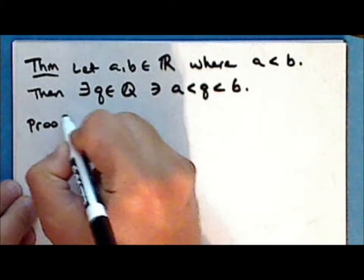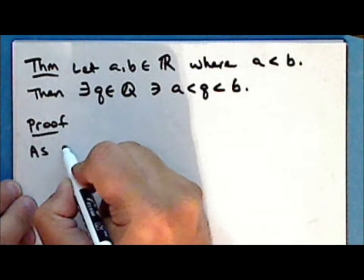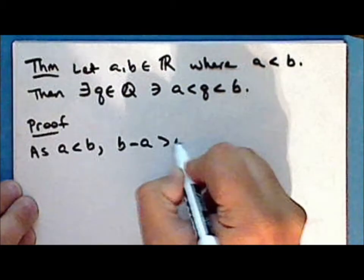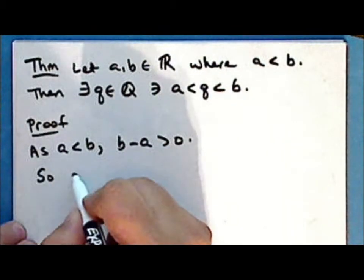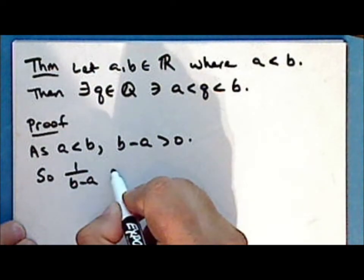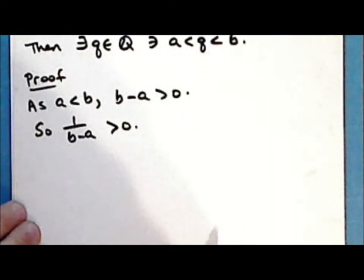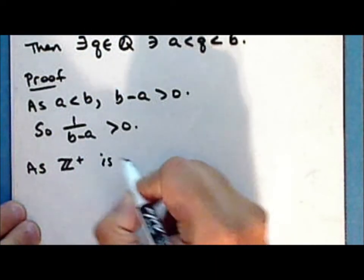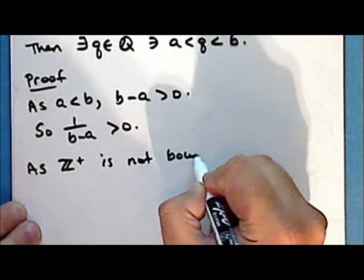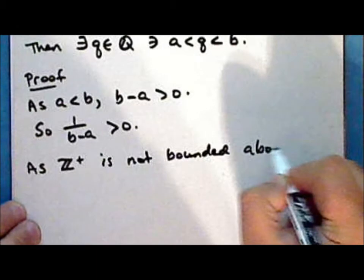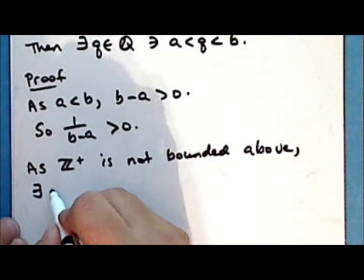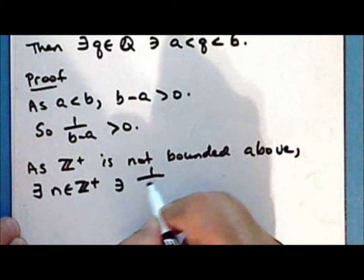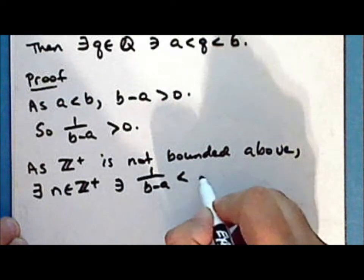Proof: As A is less than B, we have that B minus A is positive, and so 1 over B minus A is positive. Now as the set of positive integers is not bounded above, there exists a positive integer N such that 1 over B minus A is less than N.